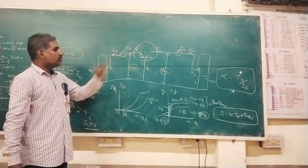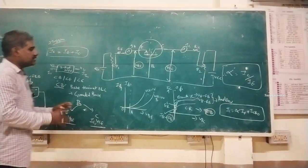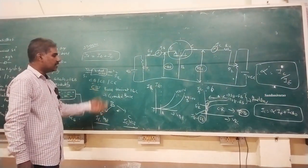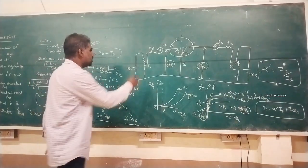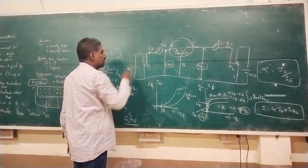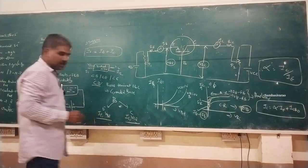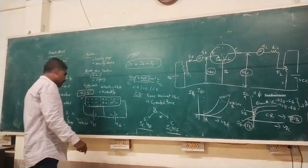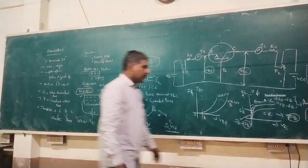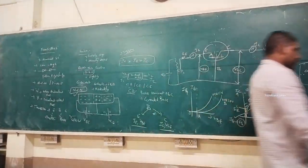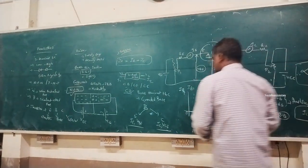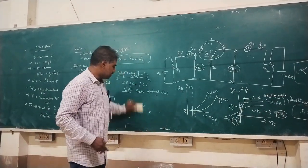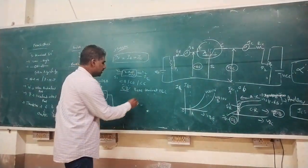This completes the input-output characteristics of common base configuration. By similar analysis, we can derive the common emitter configuration. While in common base the base terminal is common, in common emitter the emitter terminal is common.